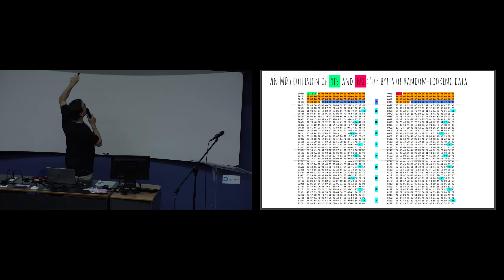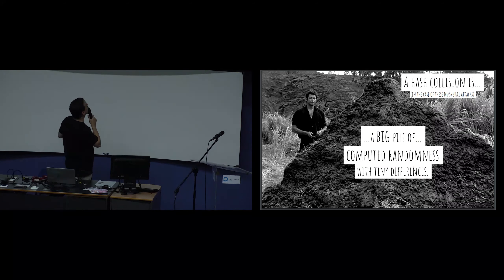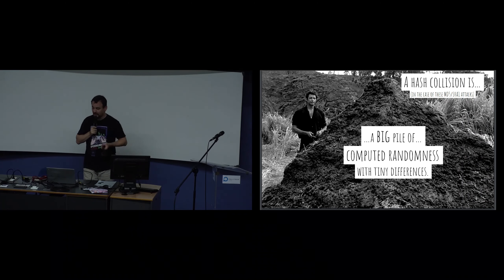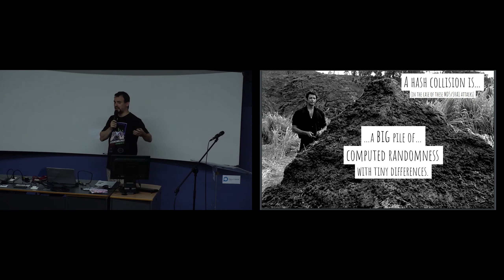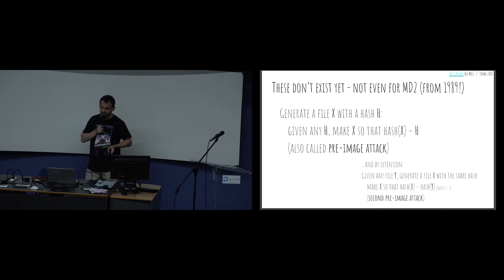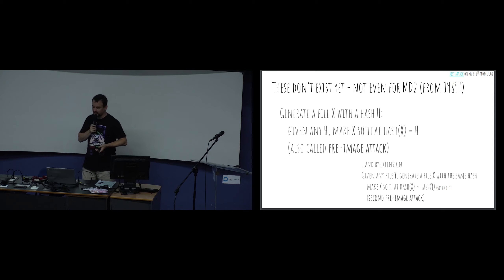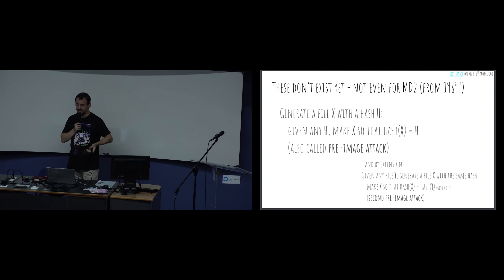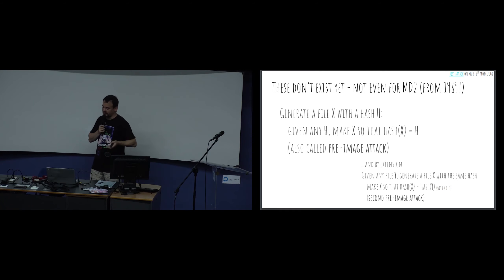If you collide the words 'yes' and 'no' on your workstation, most of the file is completely random with just tiny differences. Despite the difference, the hash is the same on both sides. A hash collision is a big pile of computed randomness with tiny differences - it is not a lot of control. Also importantly, we cannot produce a planned final hash value. Guessing a hash and creating content to match it doesn't exist yet even for MD5.